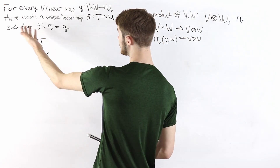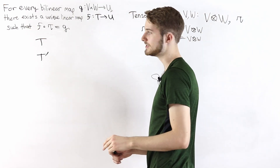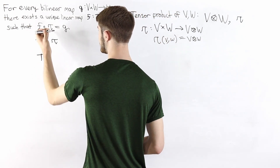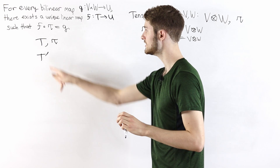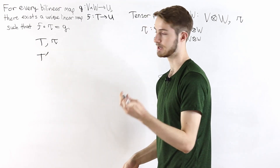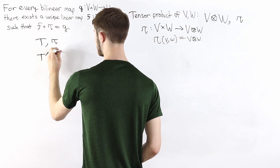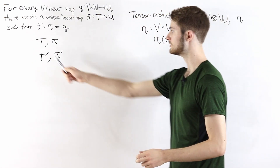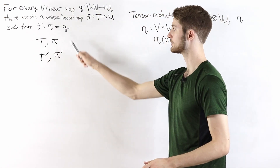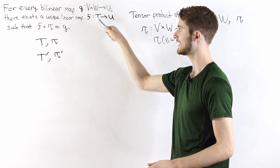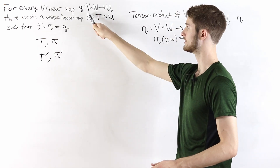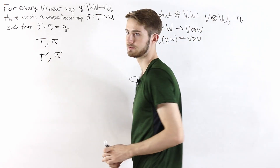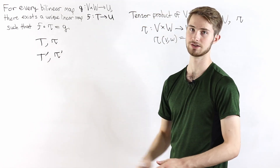We'll prove uniqueness by supposing we have two different vector spaces T and T prime that both satisfy this universal property and showing they must be isomorphic. T has an associated map tau, and T prime has an associated map tau prime. Both satisfy the universal property with V and W, and our goal is to show T is isomorphic to T prime.